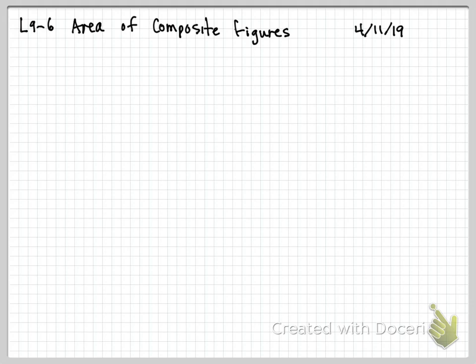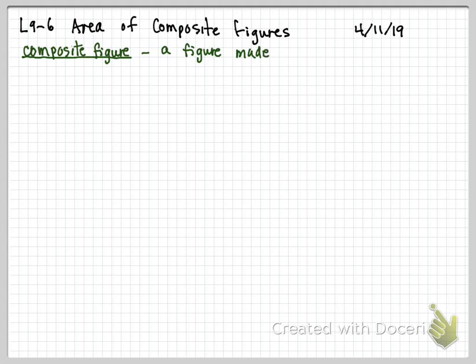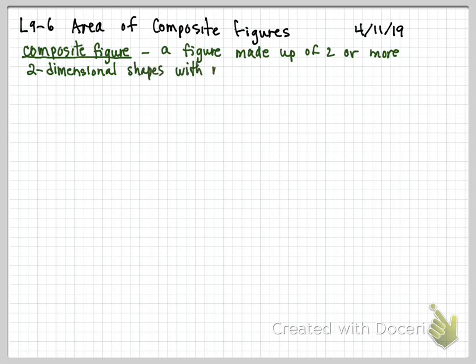We need to come up with a definition for what a composite figure is. Things that are a composition are coming from different places and put together to make one thing. So a composite figure is a figure or shape made up of two or more two-dimensional shapes — flat things — with recognizable area formulas.